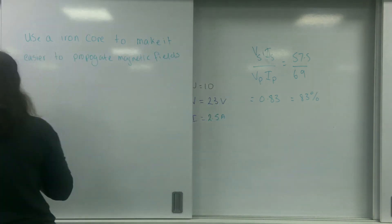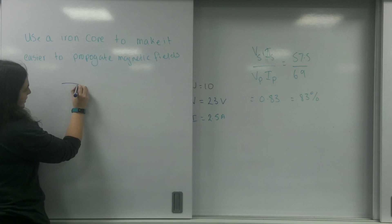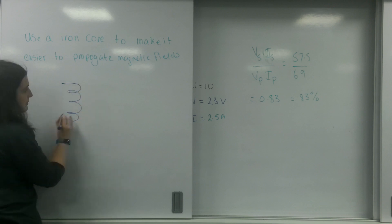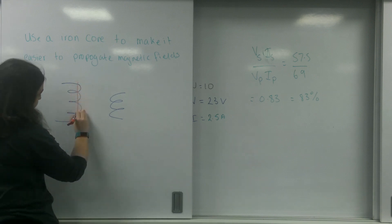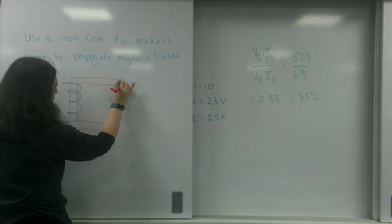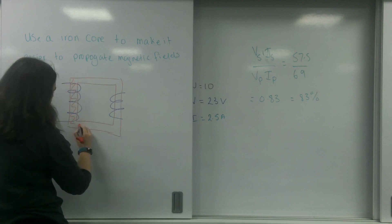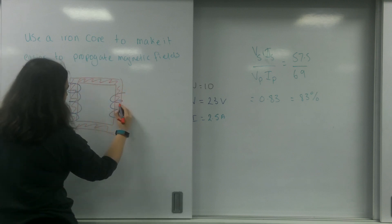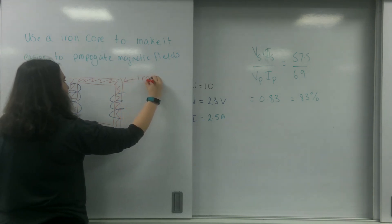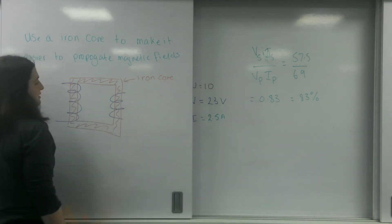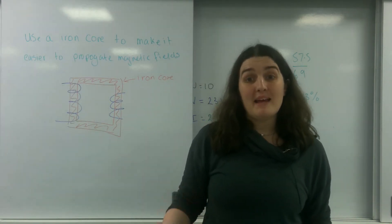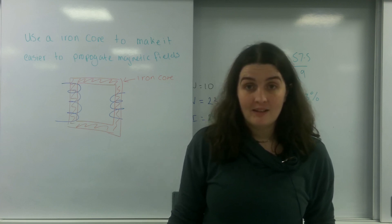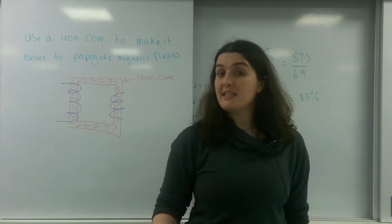So a transformer will look more like this. Here's my coils, and I'm going to put a magnetic core in it. This here is an iron core. What that's going to do is help promote those magnetic field lines to basically make it more efficient. So that's one way I can remove this inefficiency.